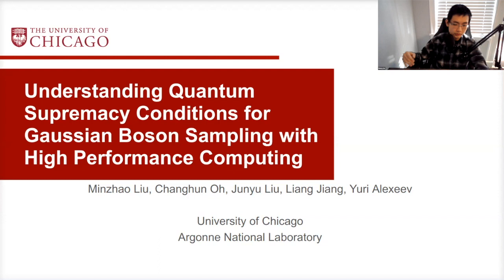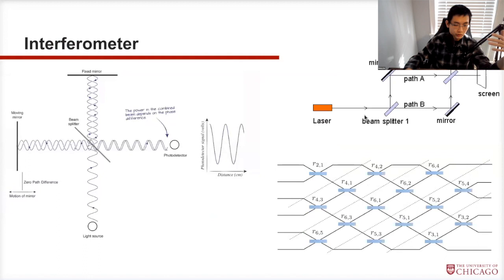What we really need to do as a field is to understand what makes an experiment truly quantum. Our work examines this question through the use of high-performance computing and computational tools. First, let me introduce the concept of boson sampling, which is to sample photons — because photons are bosons, that's why it's called boson sampling.